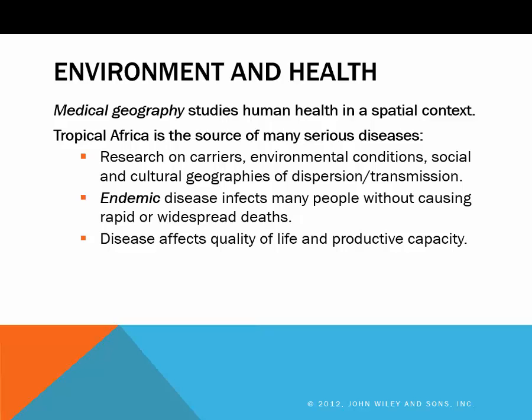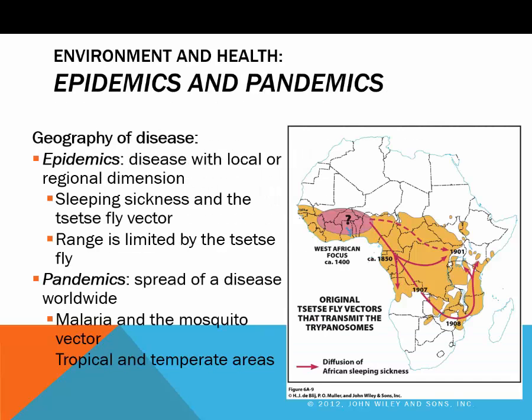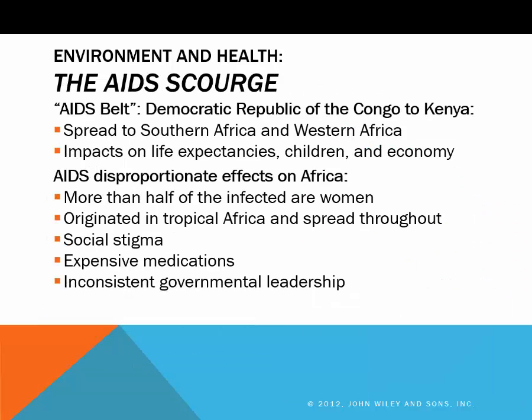Tropical Africa is a source of many serious illnesses. When a disease outbreak has local or regional dimensions, it's called an epidemic; when it spreads worldwide, it's known as a pandemic. The most deadly disease in Africa and the world is malaria, which kills a million people each year, and most of these are children under five. AIDS erupted in sub-Saharan Africa before becoming a pandemic, and by the early 1990s it spread in equatorial and east Africa in the so-called AIDS belt from the Congo to Kenya. In 2012, South Africa, Nigeria, Mozambique, Tanzania, and Zimbabwe contained the largest HIV-infected national populations.